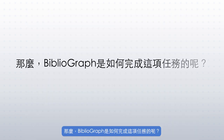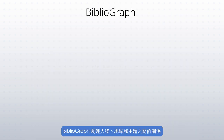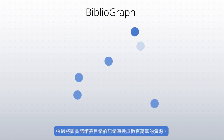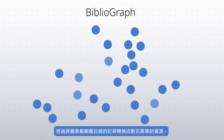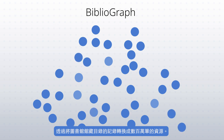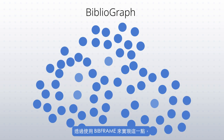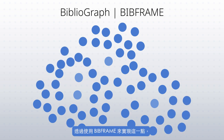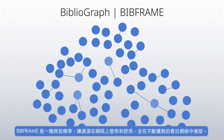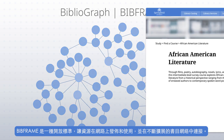So how does Bibliograph work? Bibliograph creates relationships between people, places, and topics by transforming the library's catalog records to millions of resources. It does so by using Bibframe, an open standard that allows resources to be published and used on the web and connected within an ever-expanding graph.